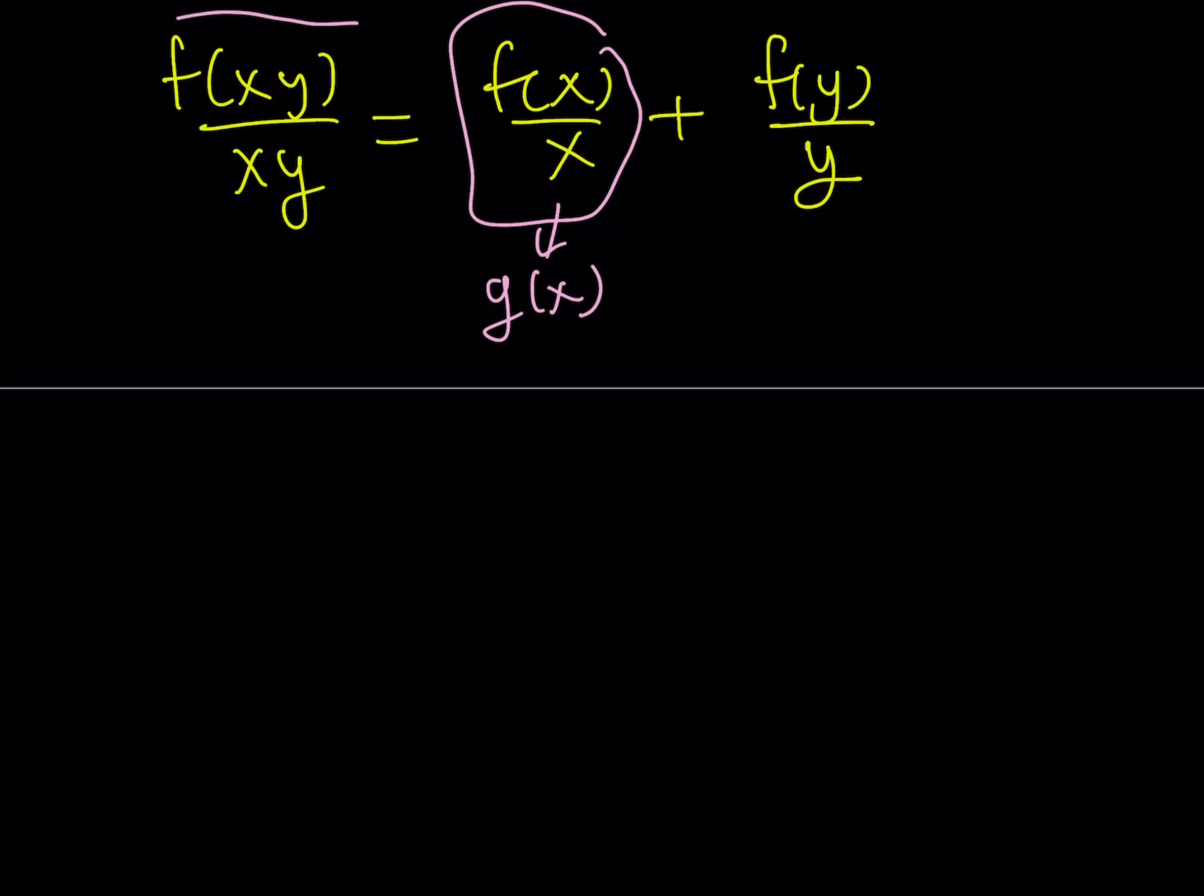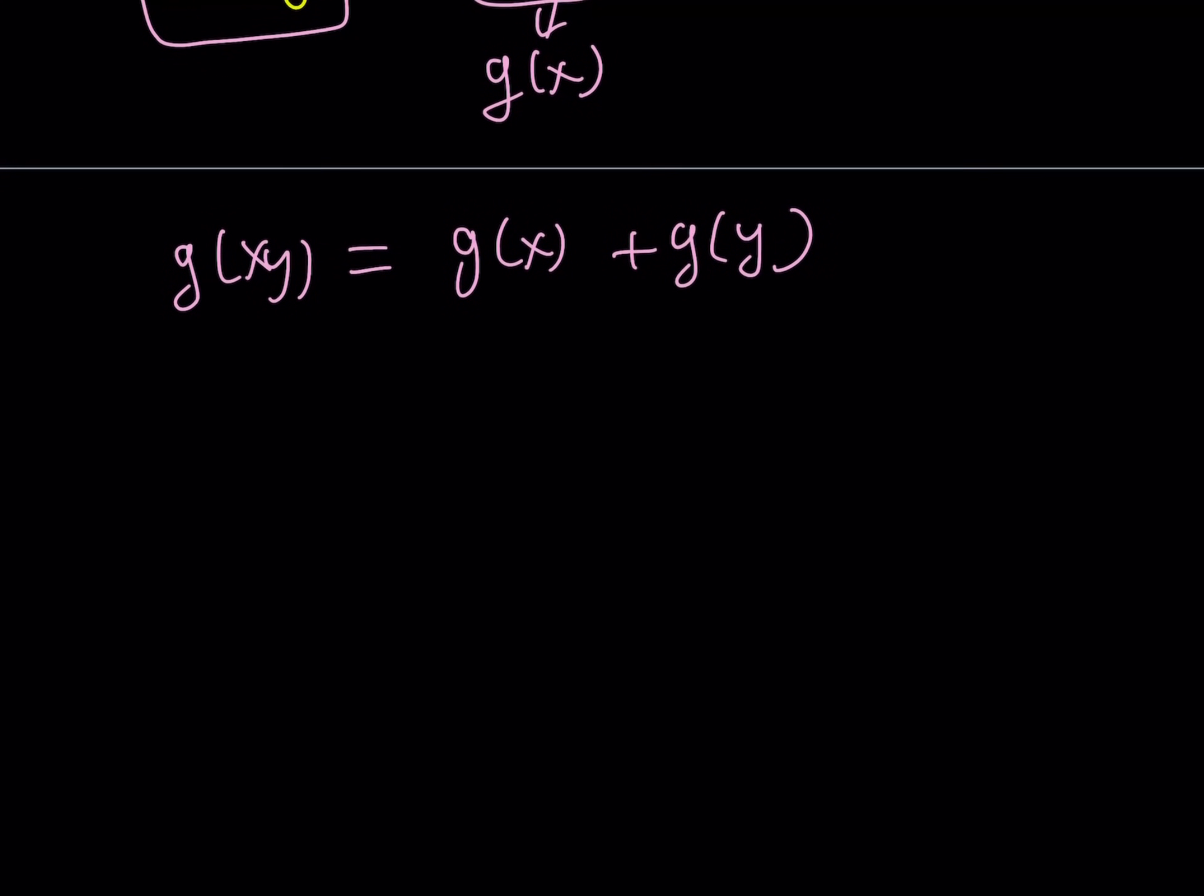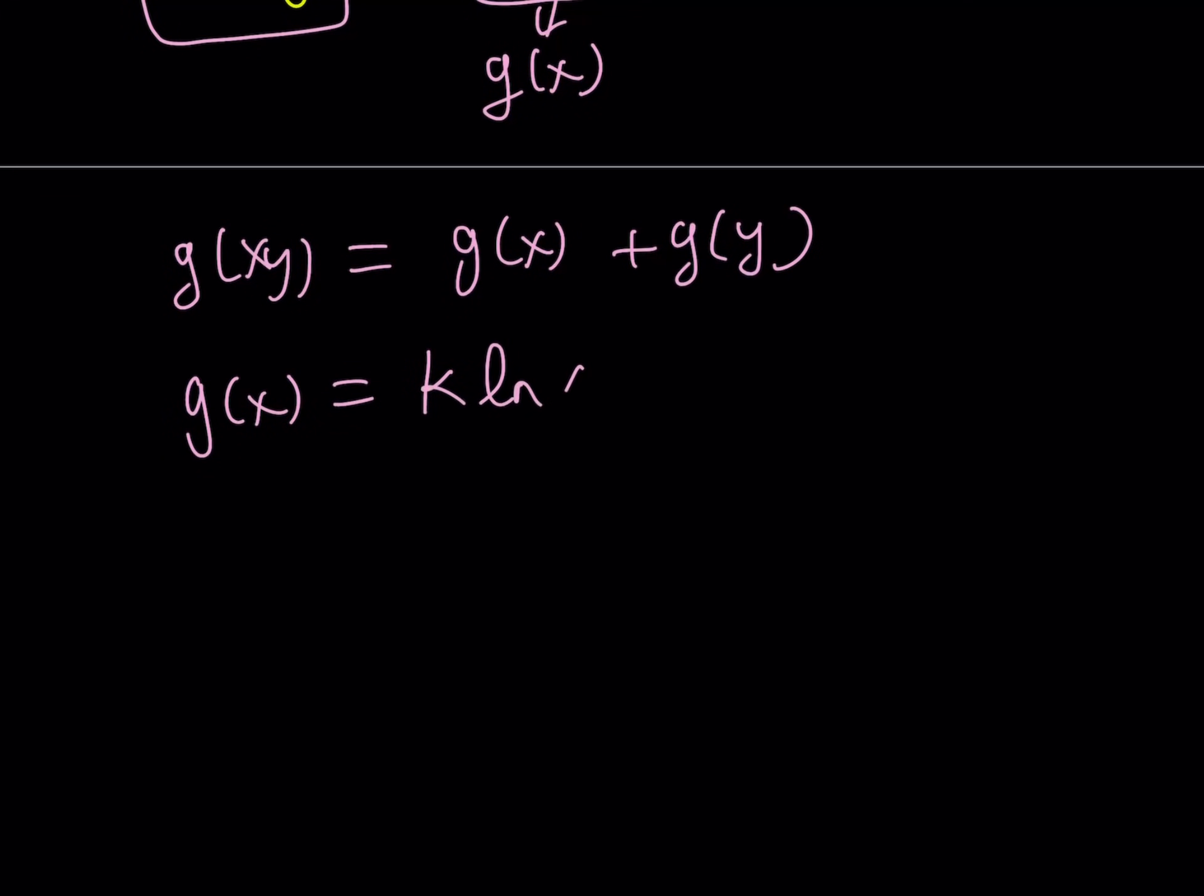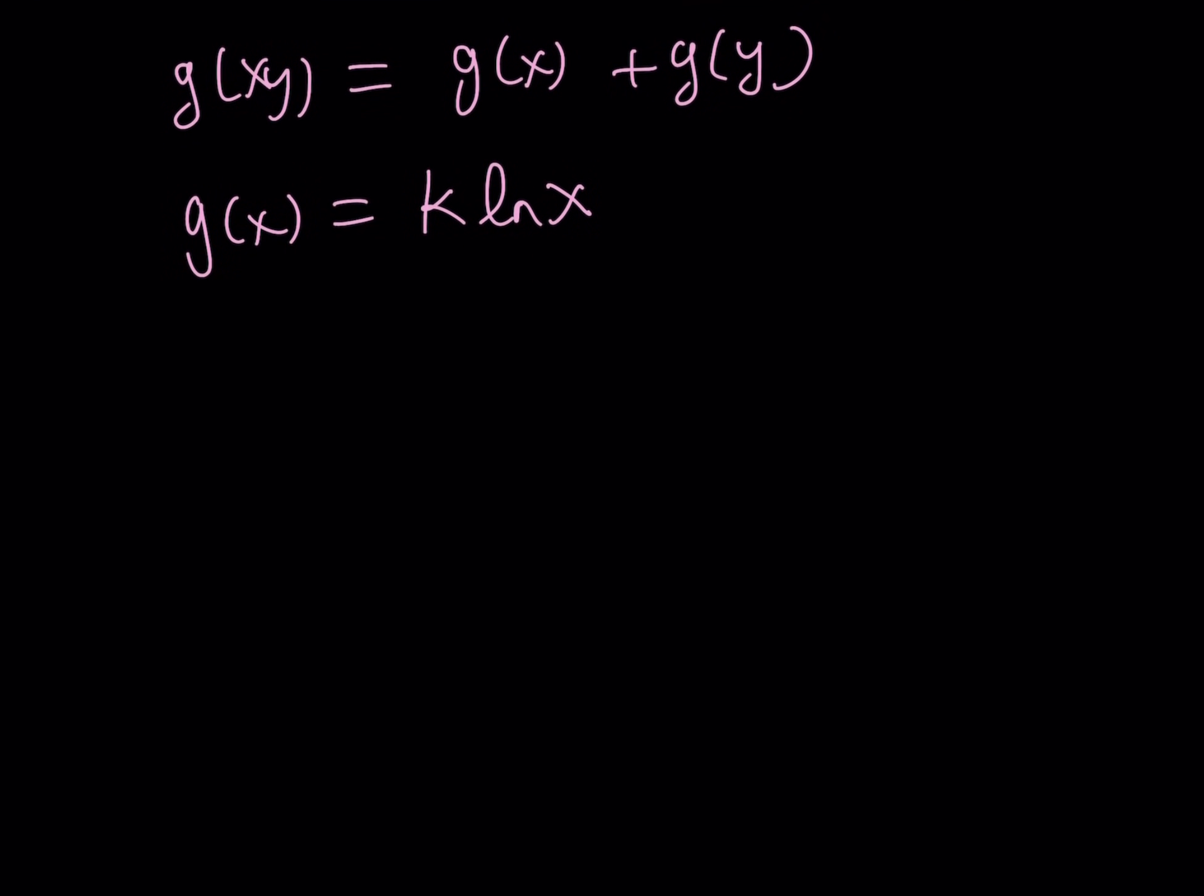Okay. If I call g(x) equals f(x) over x, then the left-hand side is going to be g(xy). All right. And f(y) over y is just going to be g(y). And hopefully, this rings a bell, doesn't it? Well, this is Cauchy's functional equation, right? Great. And we know that the solutions are logarithmic, right? So, basically, we can safely say that g(x) can be written as k times ln(x). Since I wasn't given any initial conditions, I don't know the value of k. You could also write it as a logarithm, so on and so forth. But there might be a constant there.